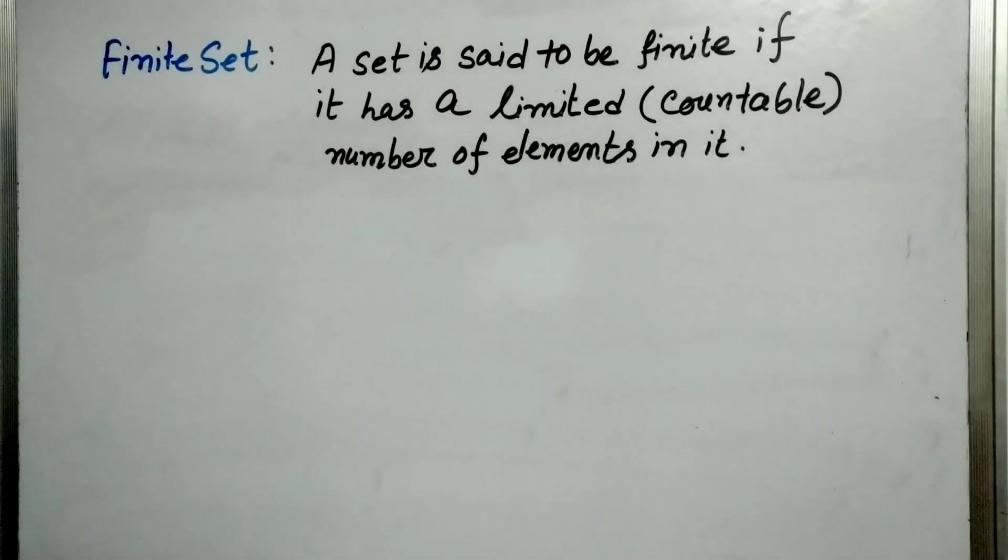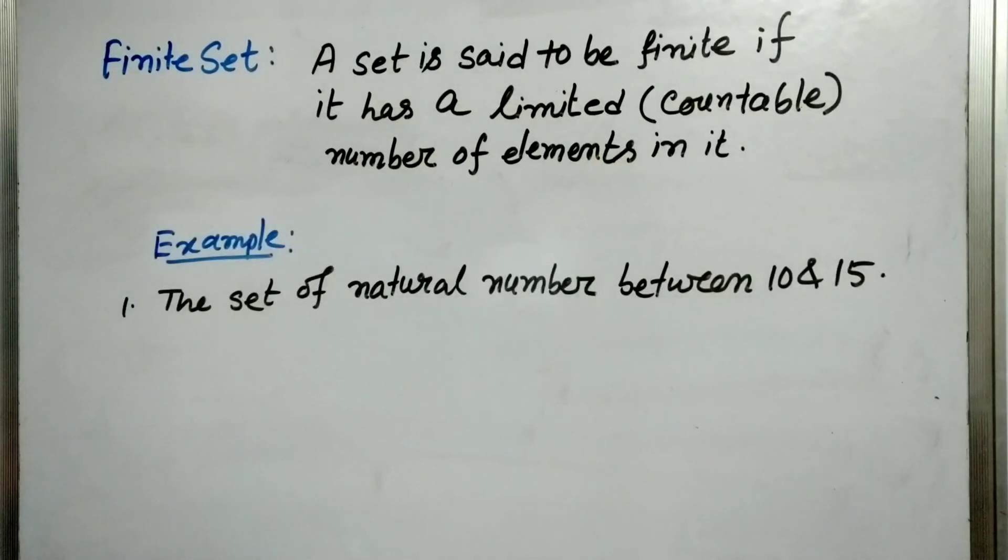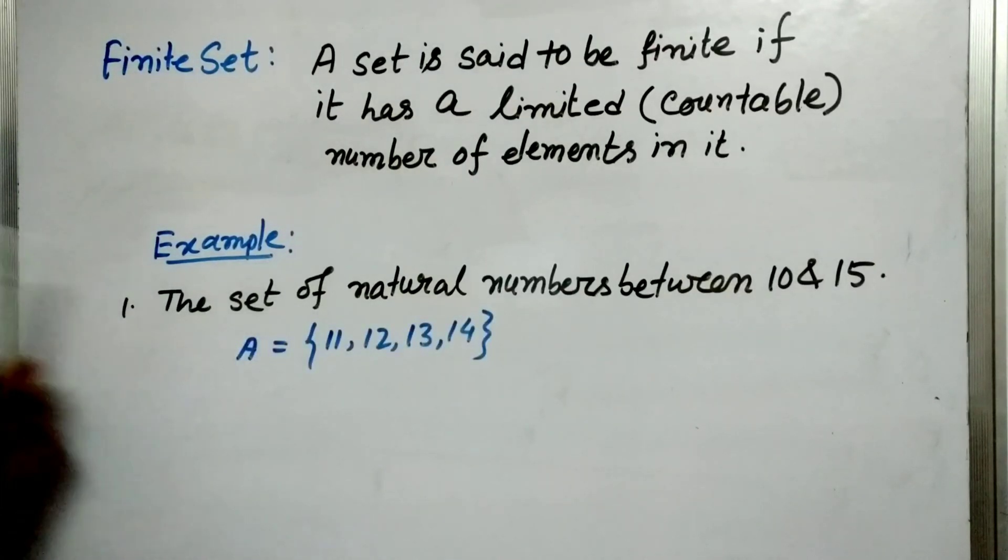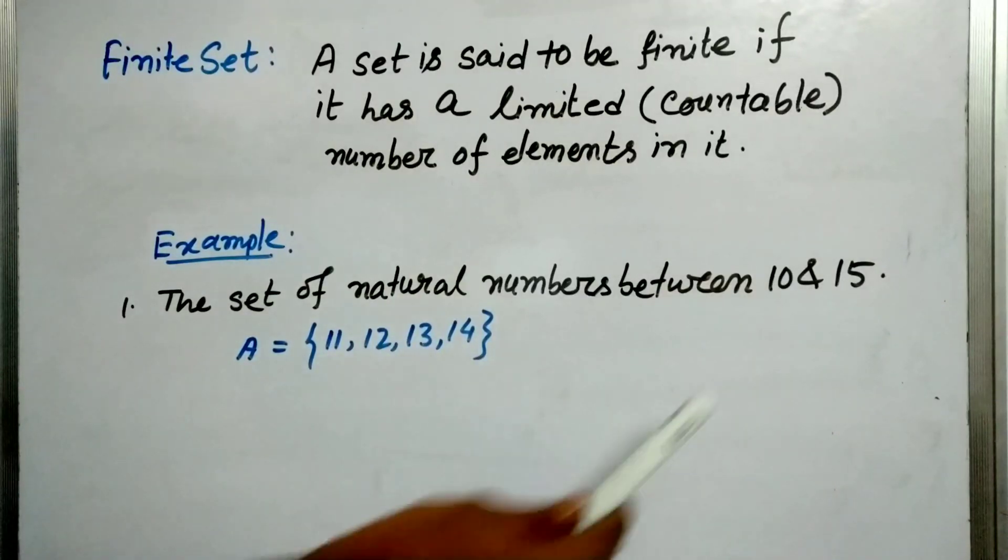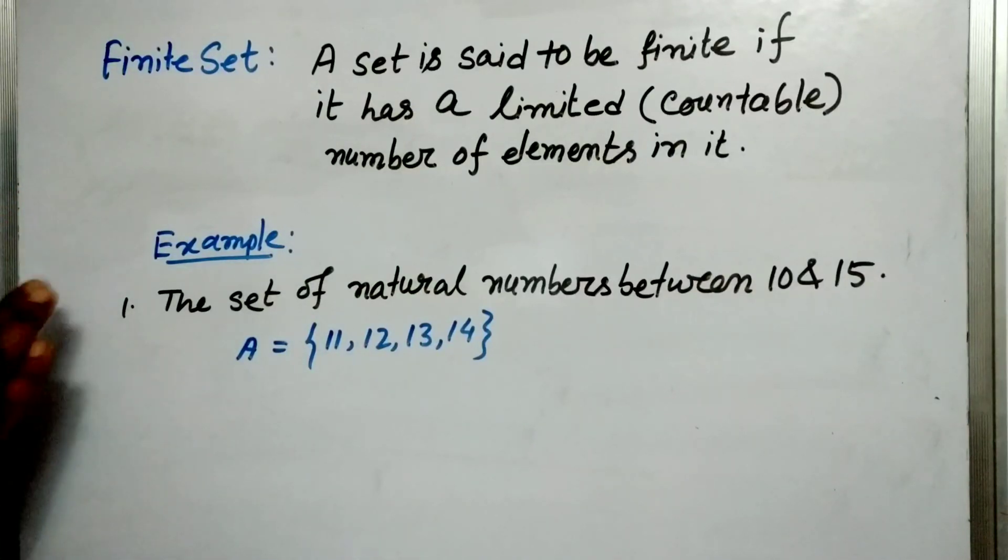So at first finite set. A set is said to be finite if it has a limited or countable number of elements in it. So let us go for an example. A set of natural numbers between 10 and 15. Let us call this set as A. So A will be {11, 12, 13, 14}. Because between 10 to 15 there are 4 natural numbers. So therefore we can count it and it is finite.